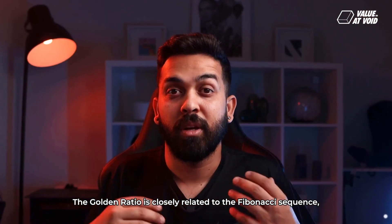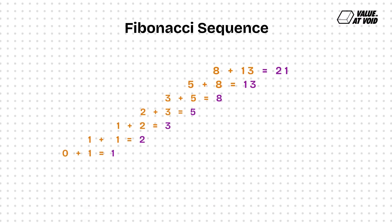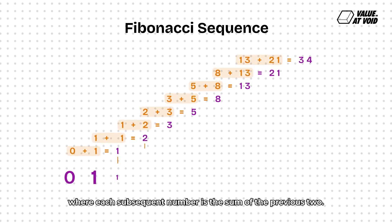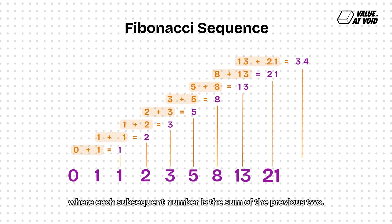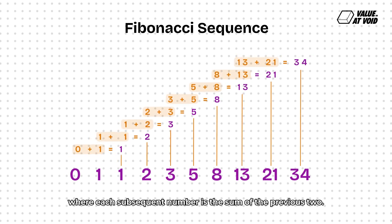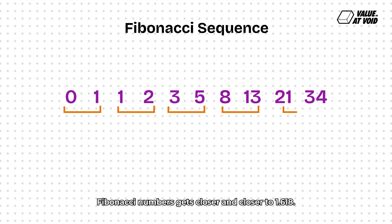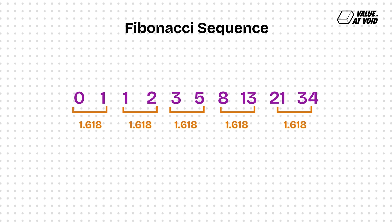The Golden Ratio is closely related to the Fibonacci sequence — a series of numbers starting with 0 and 1, where each subsequent number is the sum of the previous two. As these numbers grow, the ratio between consecutive Fibonacci numbers gets closer and closer to 1.618.